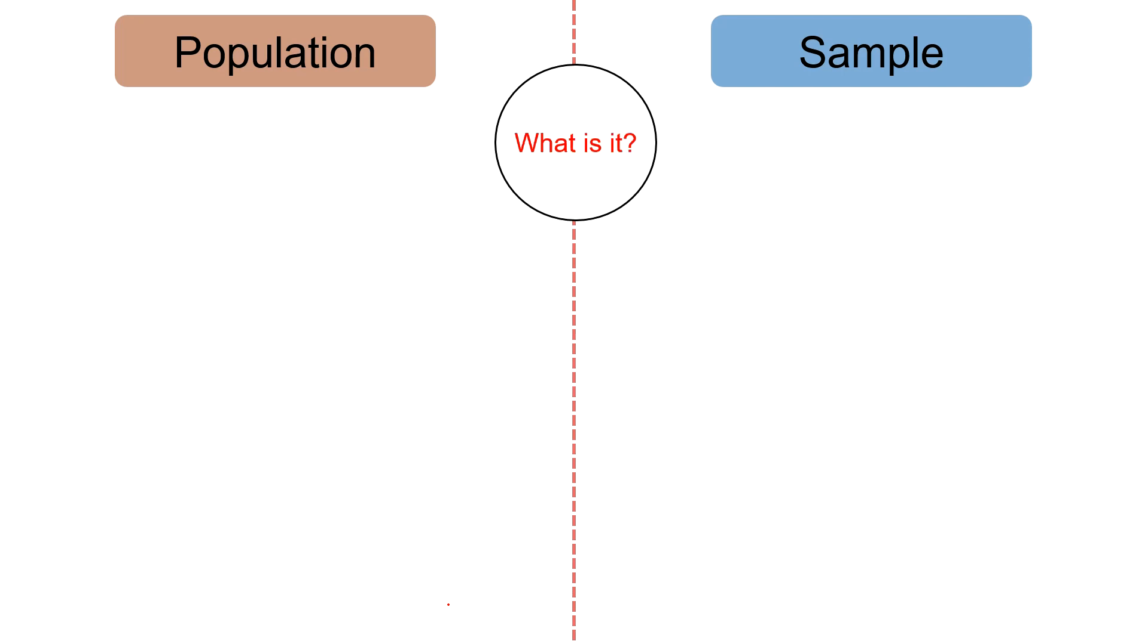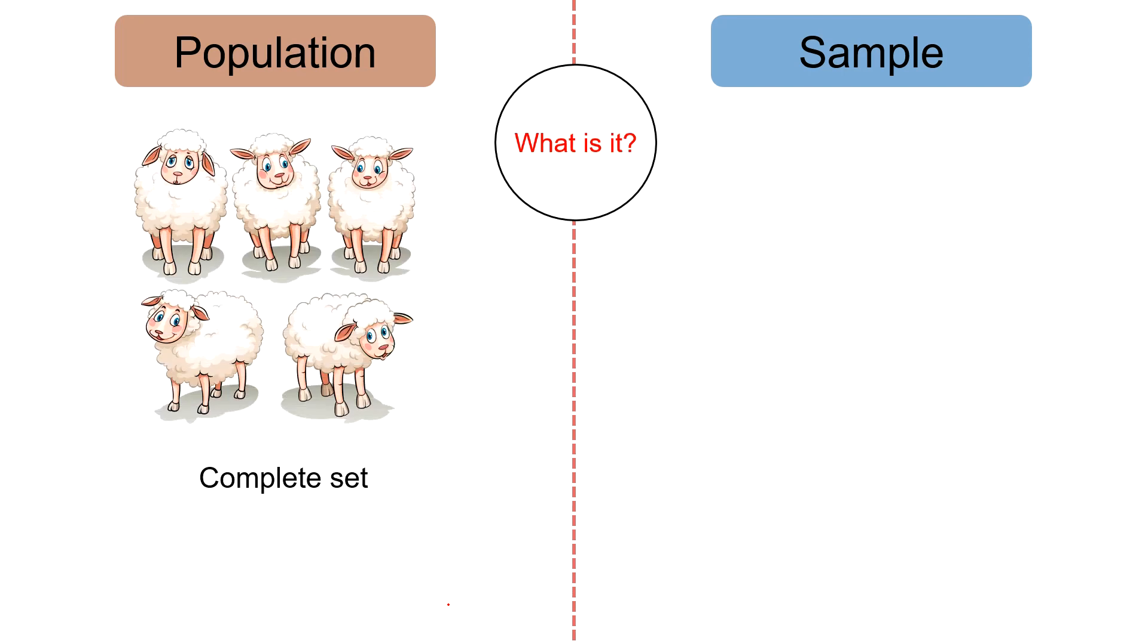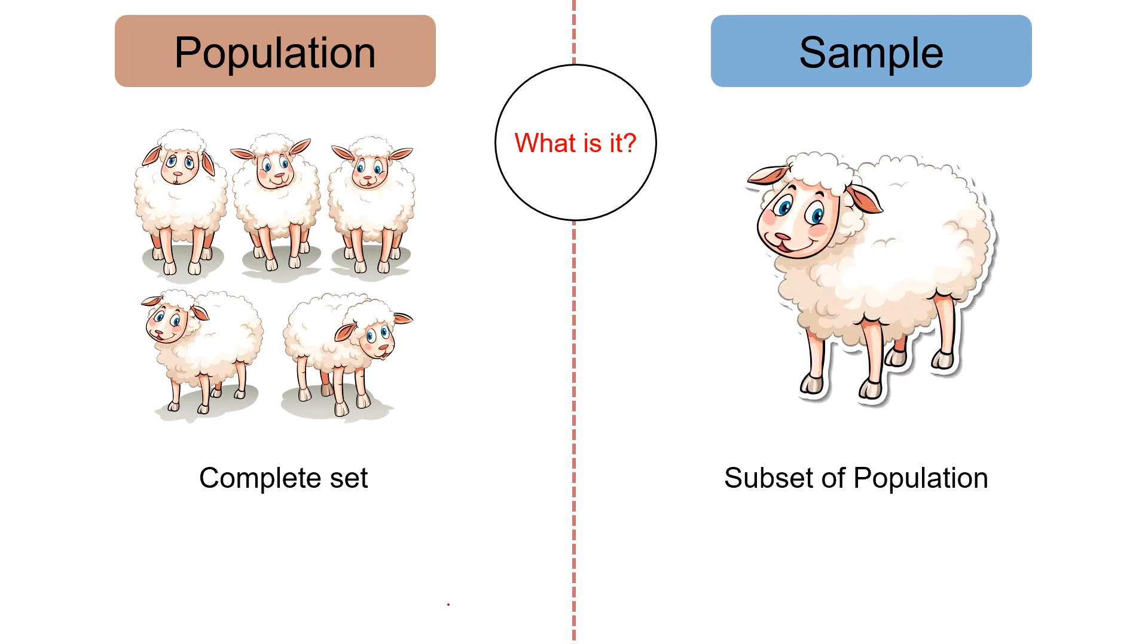Next, what is it? A population is a complete set, i.e. all members of a particular group. Whereas a sample is a subset of the entire population, i.e. only a handful of items of the population are included in a sample that represents the entire population.